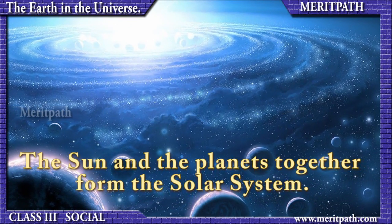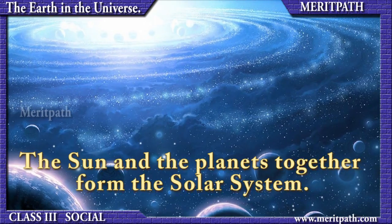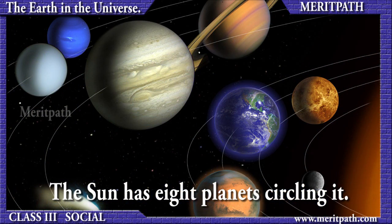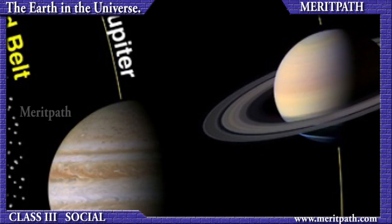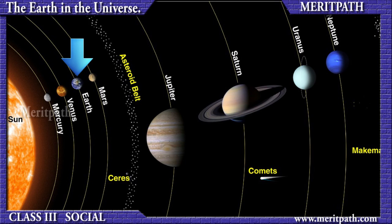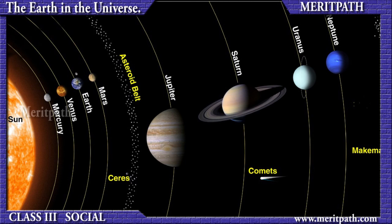The solar system is made up of the Sun and all the smaller objects that move around it. Apart from the Sun, the largest members of the solar system are the eight major planets.